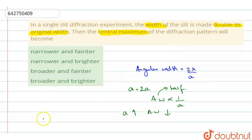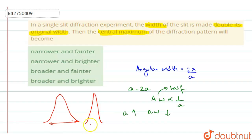This means the central maxima becomes sharper. The angular width represents the spread of the central maxima — if this distance decreases to half, you can draw the curve narrower. So the central maxima becomes more sharper. Furthermore, if 'a' is doubled, the intensity of the central maxima becomes four times, because intensity is the square of the amplitude.